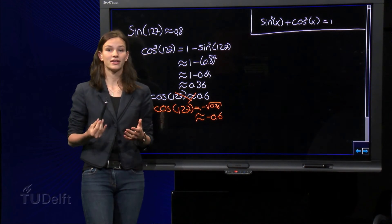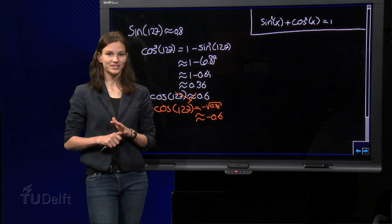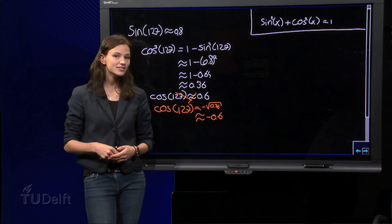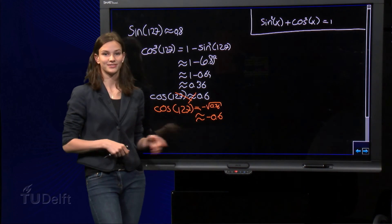Indeed, knowing that cosine of 127 must be negative and that its square must be 0.36 implies that it equals minus 0.6.